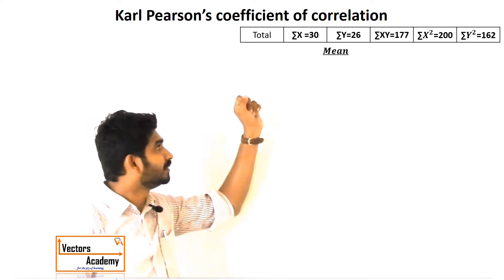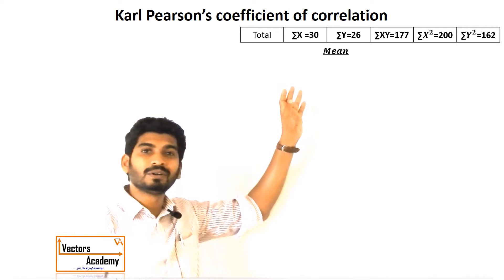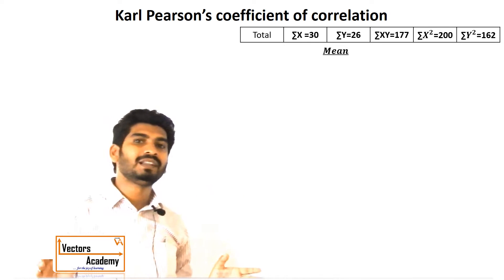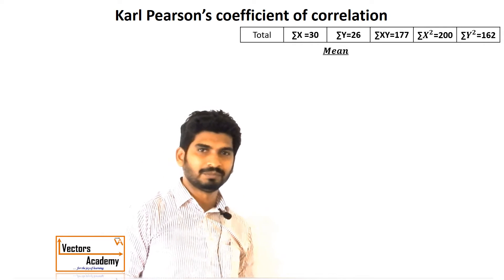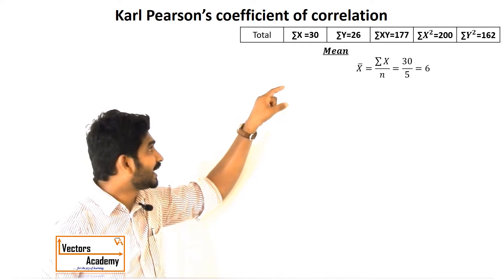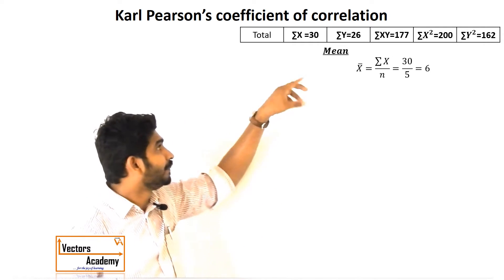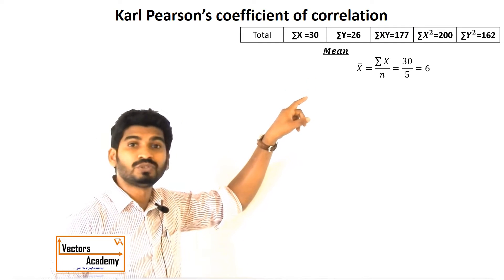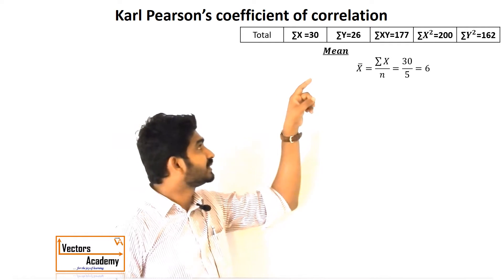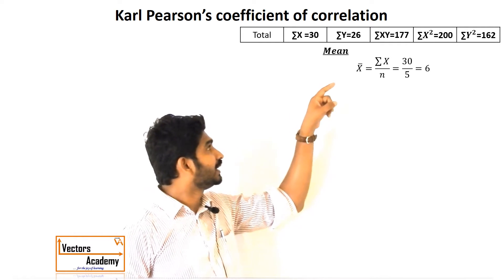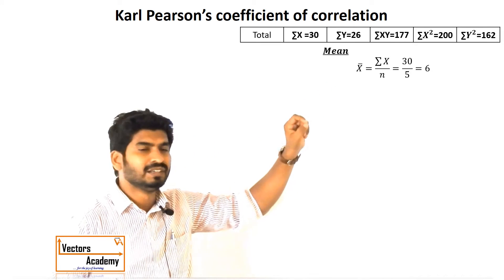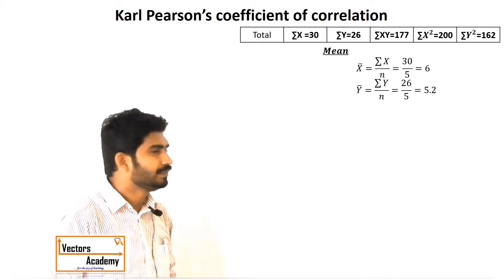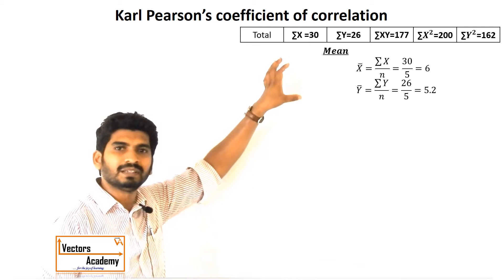First comes the mean — the simple average of the numbers. The mean of x is calculated as summation of x divided by n, where n is the number of students. Summation of x is 30, so 30 divided by 5 gives a mean of 6. Similarly, we calculate the mean of y.